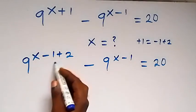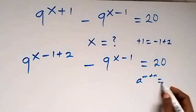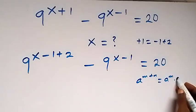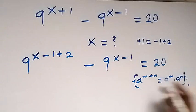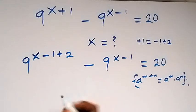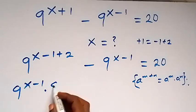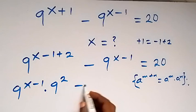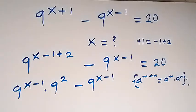From here, where we have 8 raised to the power n plus n, we have 8 raised to the power n times 8 raised to the power n. Applying this here, we can separate x minus 1 as n and 2 as n. Then we have 9 raised to the power x minus 1 times 9 raised to the power 2, then minus 9 raised to the power x minus 1, equal to 20.